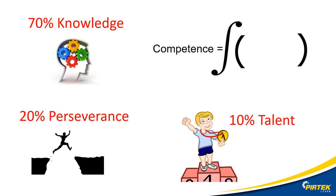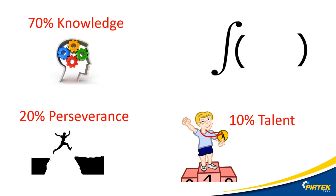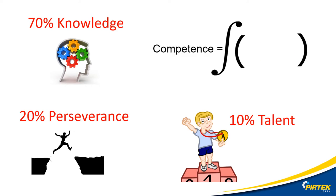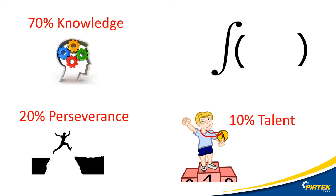70% knowledge, 20% perseverance, 10% talent. What does that mean? We've all heard the saying — the definition of insanity is doing the same thing over and over again and expecting a different result. Knowledge is truly power.